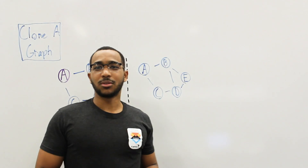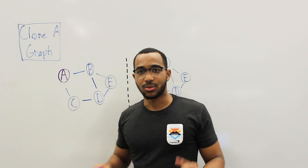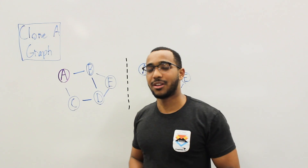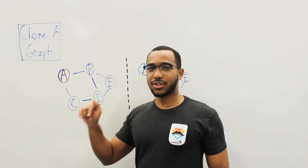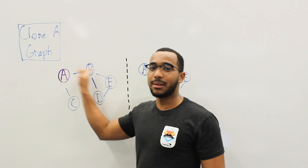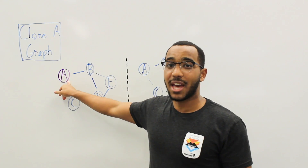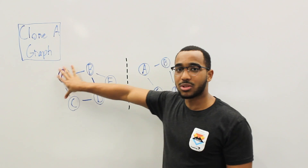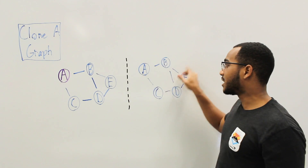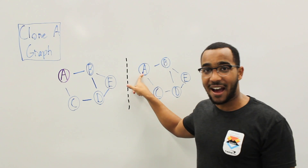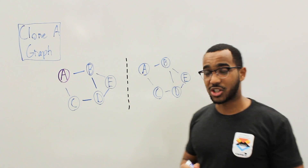Alright, so today our question is clone a graph. So what we are given is an undirected graph. An undirected graph is where our edges don't have a certain direction to them. I can go from A to B or B to A — there's no direction. I'm given A. What I need to do is make a copy of the graph and return the copied graph entry point, which is A. That's all we need to do for this question.